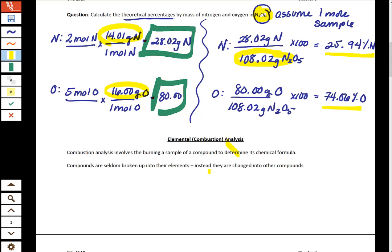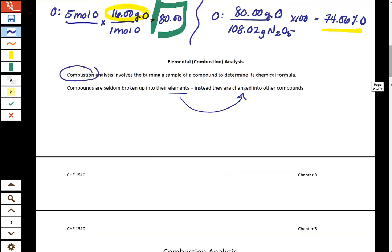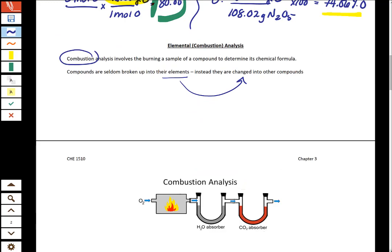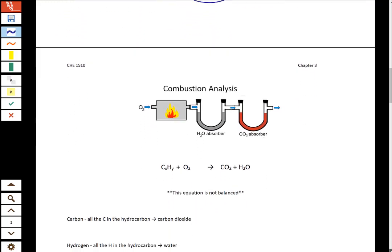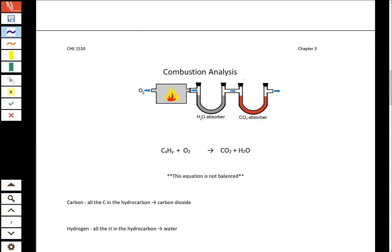When we look at combustion analysis, what I want you to remember is that combustion is a chemical reaction and it is the process of burning things. And when we burn things, the elements in a compound get changed into other compounds. So specifically, if we look at the figure that's on the next page, we can describe what is happening here and what the chemical reaction looks like.